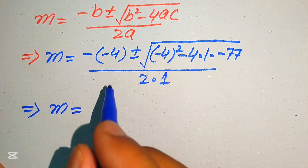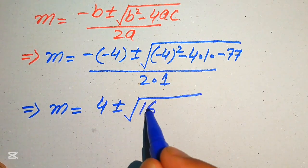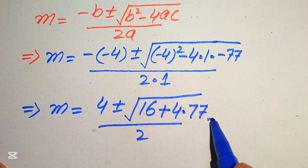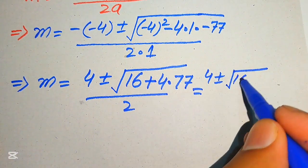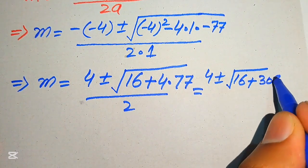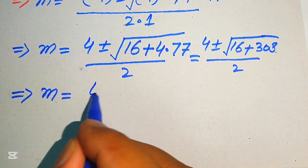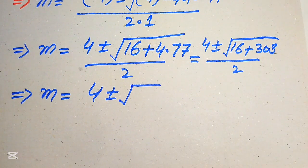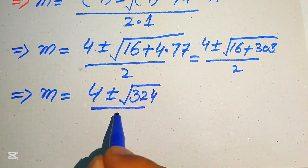Simplifying: minus times minus gives plus 4. Then we have plus or minus square root of 16 plus 4 times 77. Since 4 times 77 equals 308, this becomes square root of 16 plus 308 equals square root of 324, divided by 2.